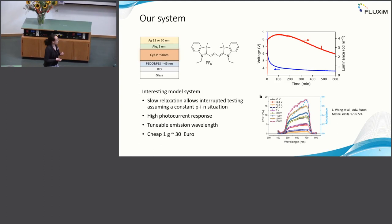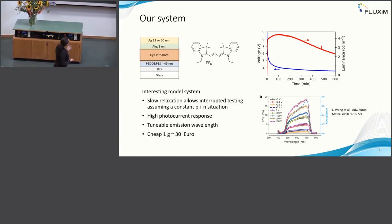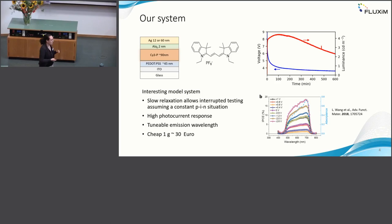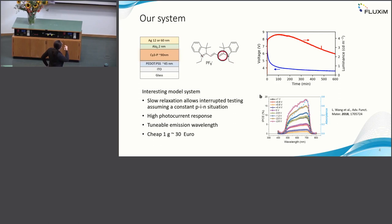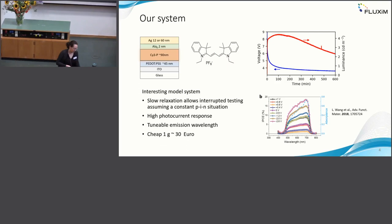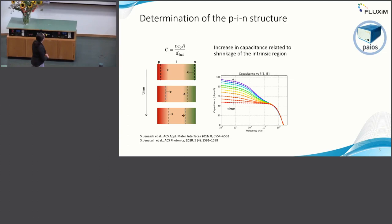The other benefit is they have quite a high photo-current response. They were initially used in solar cells, and in such a simple device stack they have really high EQE for a single layer. This is really important as you will see afterwards to measure one of the techniques. Furthermore, you can tune the emission wavelengths by just changing this conjugated chain length, and they are also really cheap because they are used in biological imaging.